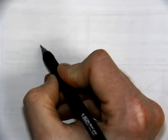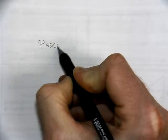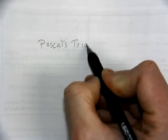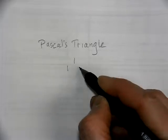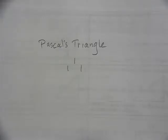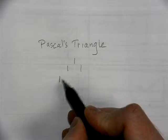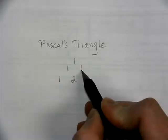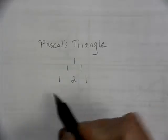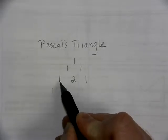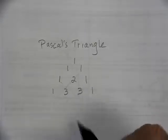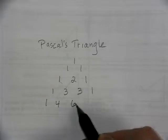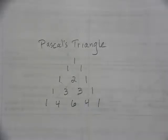Now let's make a Pascal's Triangle from scratch. You've got to know that it's going to start out with 1, 1, and 1. You always start your row with a 1, add your two numbers above it, and end with a 1. So 1 plus 2 is 3, 2 plus 1 is 3, and end. You can continue this pattern really infinitely.